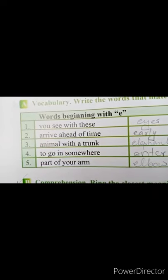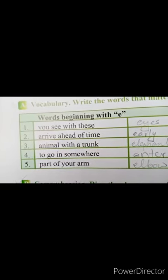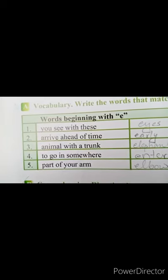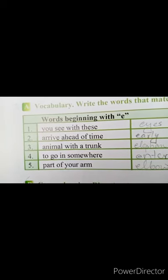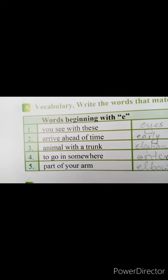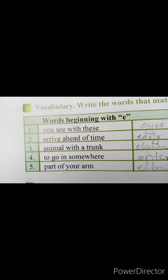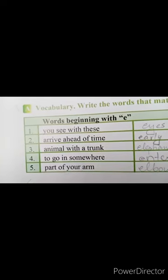Students, اب آپ کو یہاں پر descriptions دی گئی ہے جو آپ کو بتاتی ہے کہ چیز کیا ہے — تو آپ نے اب اس کا نام لکھنا ہے. Words beginning with E. The very first is: 'You see with these' — آپ ان سے دیکھتے ہیں. So the word is 'eyes'.